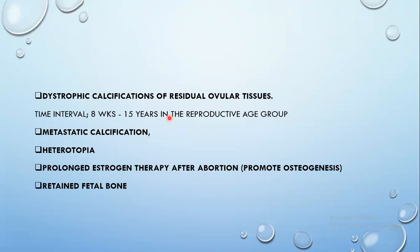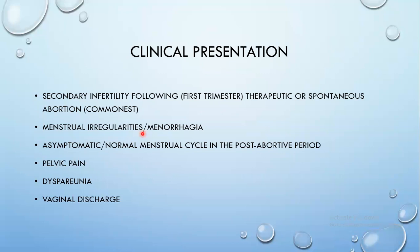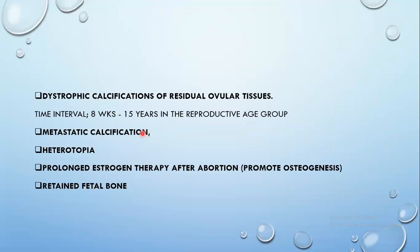Less accepted theories include metastatic calcification in people with systemic mineral imbalances such as hyperparathyroidism causing hypercalcemia. Others postulate it is a form of choristoma where abnormal tissues bloom in abnormal places. Some attribute it to prolonged estrogen therapy after abortion, as estrogen promotes osteogenesis, and others think it is simply retained fetal bone within the endometrium.